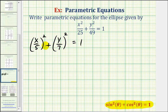Now comparing this to the identity below, we can let x divided by 5 equals sine theta and y divided by 7 equals cosine theta. Or if we wanted to, we can let x divided by 5 equal cosine theta and y divided by 7 equals sine theta. Either way, it would satisfy this equation.